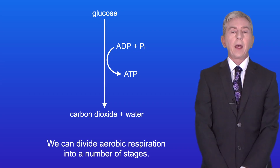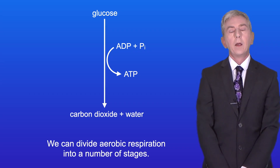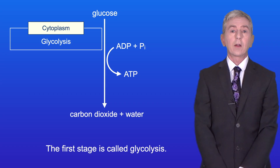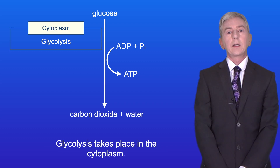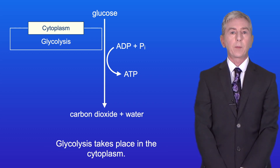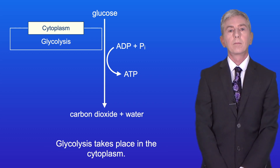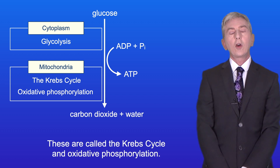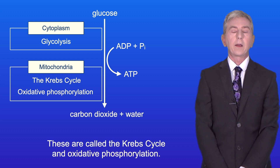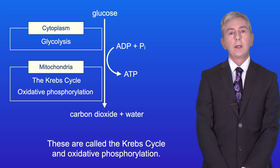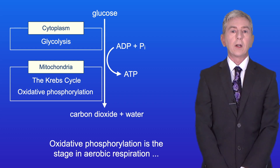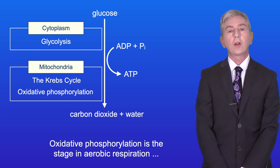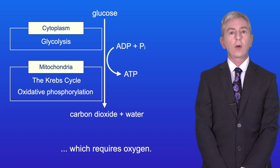We can divide aerobic respiration into a number of stages. The first stage is called glycolysis and glycolysis takes place in the cytoplasm. The next two stages take place in the mitochondria: these are called the Krebs cycle and oxidative phosphorylation. Oxidative phosphorylation is the stage in aerobic respiration which requires oxygen.